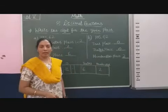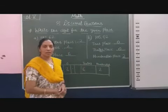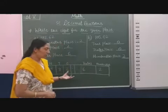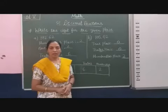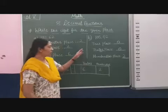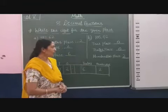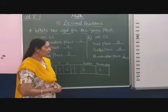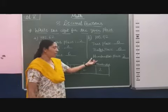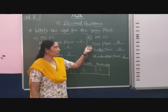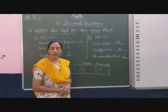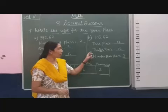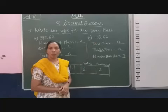Here we find the value of the given places in the decimal number using the place value chart. Now students, be careful: the tens place is different from the tenths place. If the question asks for the hundredths place — not hundreds — then the hundredths place value we get is 1.